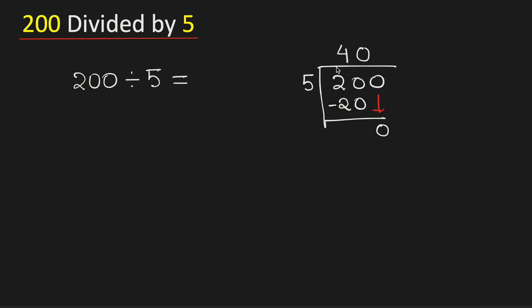Now we know that 5 times 0 is 0. Subtract, we get 0.